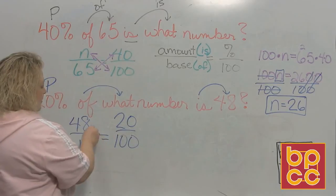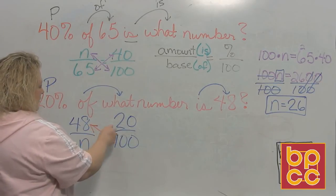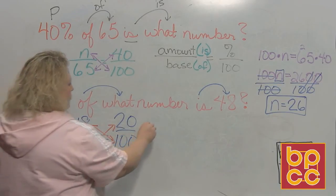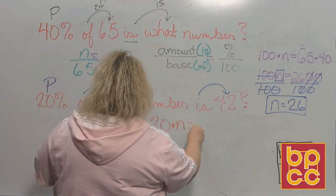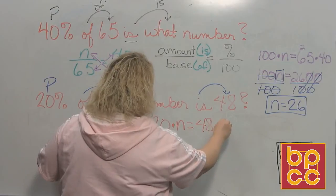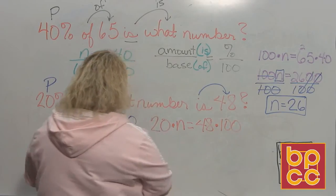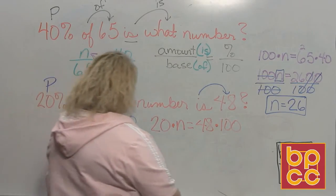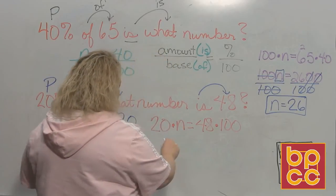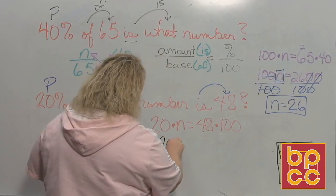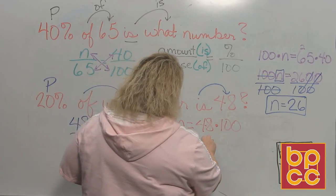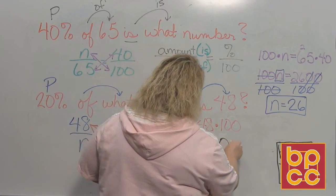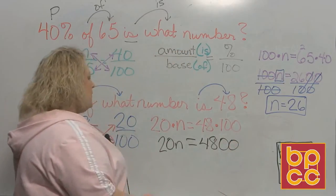So when I cross multiply, I get 20 times something is equal to 48 times 100. So then when I do that math, that's 20n is equal to, the shortcut for multiplying by 100 is adding the two zeros to the back, right? So 4800.